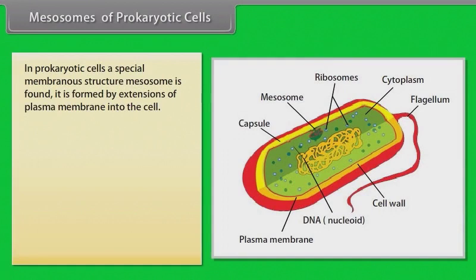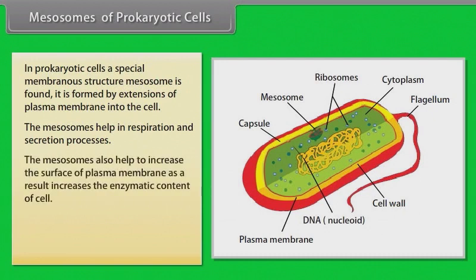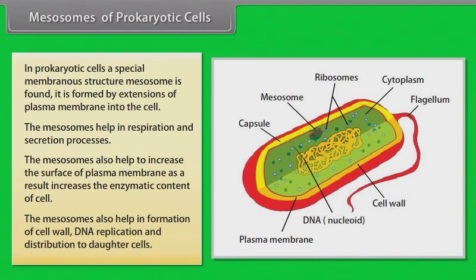Mesosomes of prokaryotic cells: In prokaryotic cells, a special membranous structure called mesosome is found. It is formed by extensions of the plasma membrane into the cell. Mesosomes help in respiration and secretion processes, and also help to increase the surface area of the plasma membrane, thereby increasing the enzymatic content of the cell. Mesosomes also help in the formation of cell wall, DNA replication, and distribution to daughter cells.